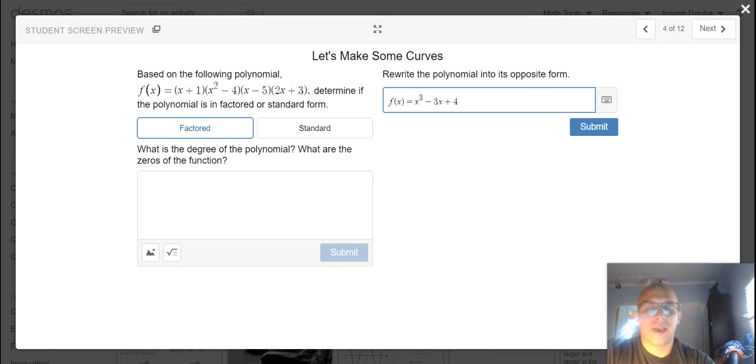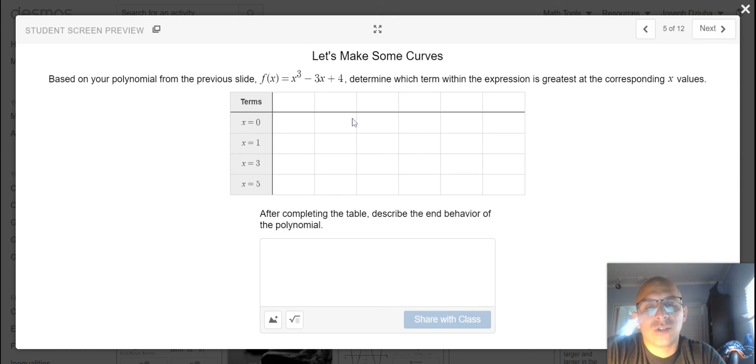Note when you decide whatever that form looks like, we are going to take your polynomial and substitute it in accordingly to our next slide, where you will determine which term within the expression. So this expression has an x of the third term.